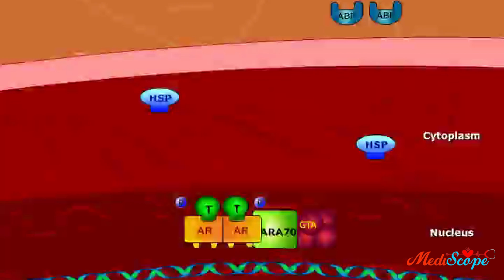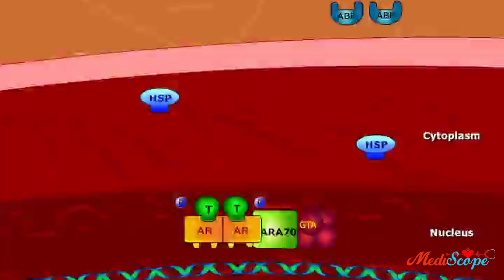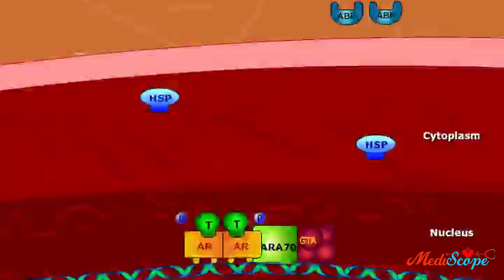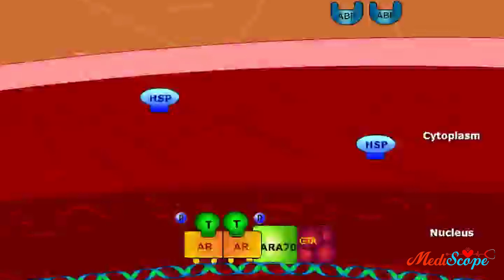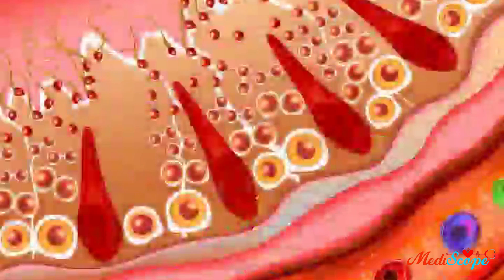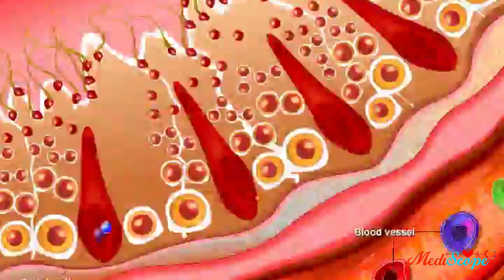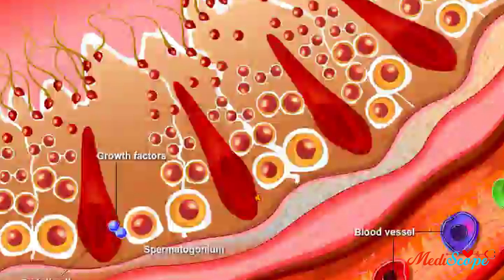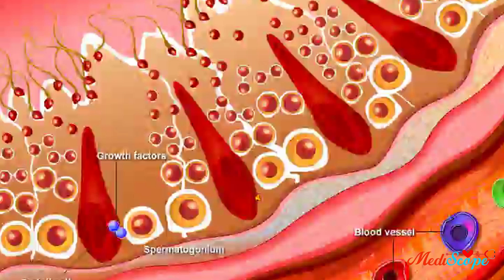This allows the complex to interact more easily with the general transcription apparatus, or GTA. The activation of target genes leads to an increase in the synthesis of proteins and growth factors, thus promoting spermatogenesis. Now that growth factors have been produced, the process of spermatogenesis begins.